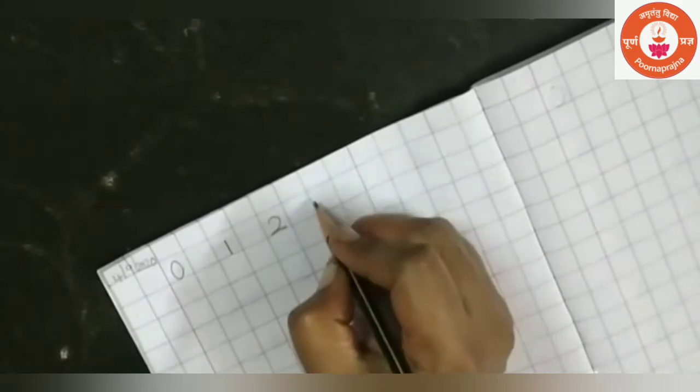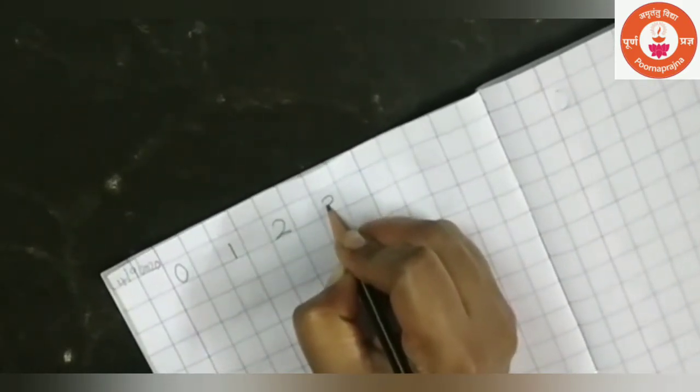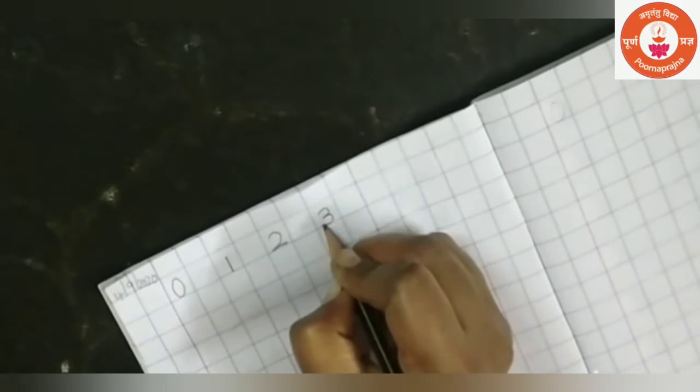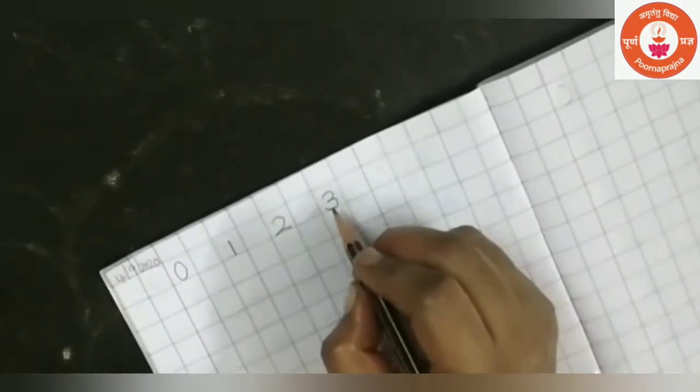Leave one box and write 3. Right curve, one more right curve, touch the line. Now after 3.